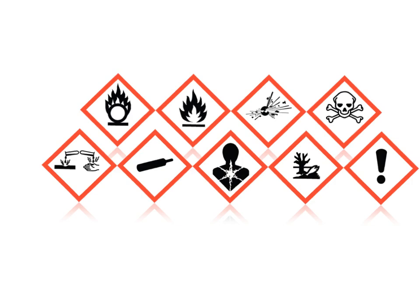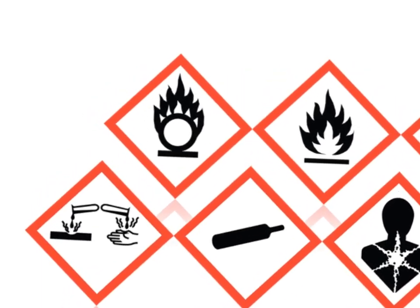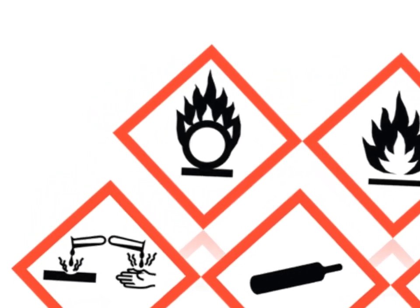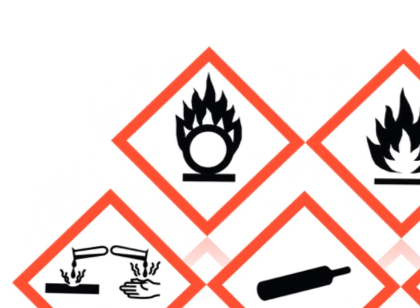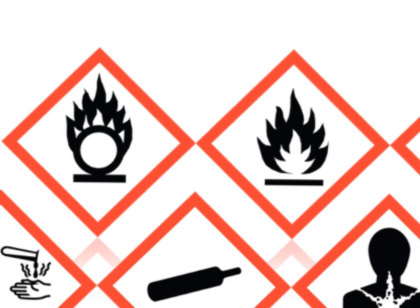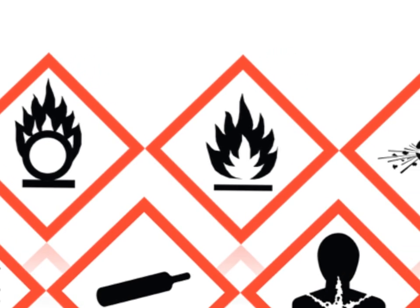Let's start at the top left and work our way around. The first symbol appears to be an O on fire. This is the symbol for an oxidizing agent, which is a chemical that causes or enhances the combustion of other materials. The next image is a fire. This represents a material that is flammable or emits flammable gases.